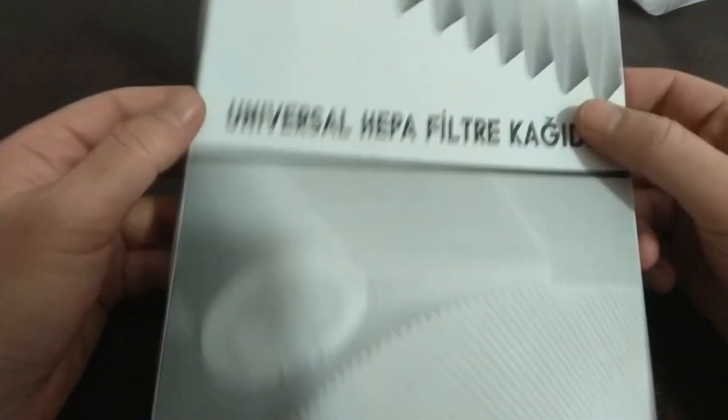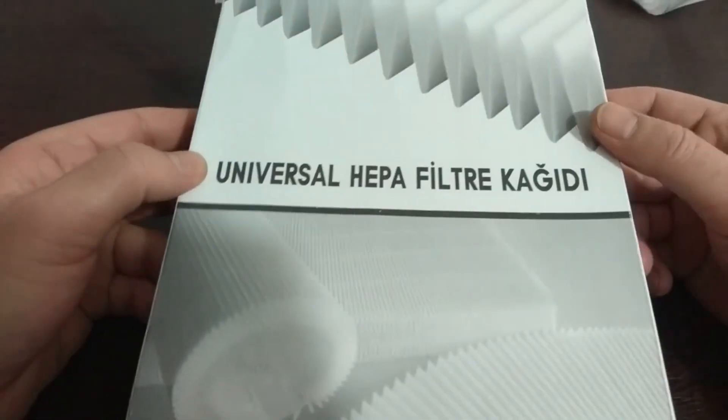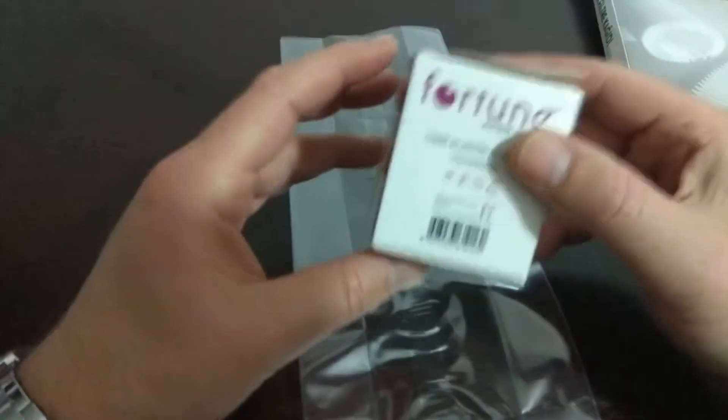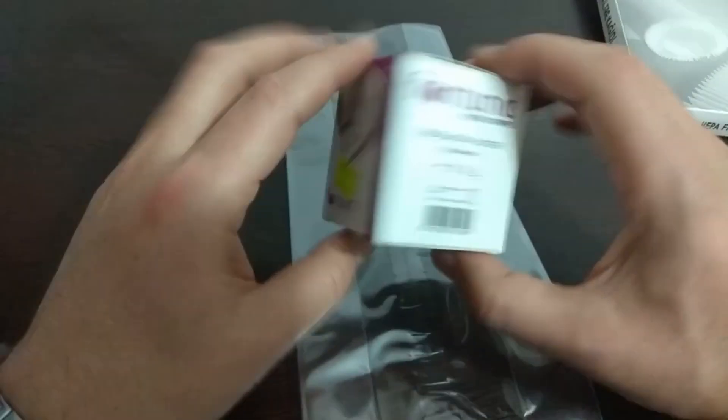This is the material we will use for the HEPA filter. You can buy this online very easily. It's not expensive either - I don't know how much the prices are in today's conditions, but it was very cheap when I bought it. To paste this filter, we will use a plaster.